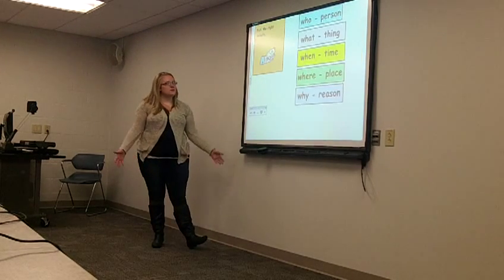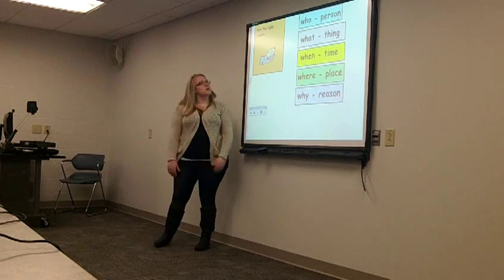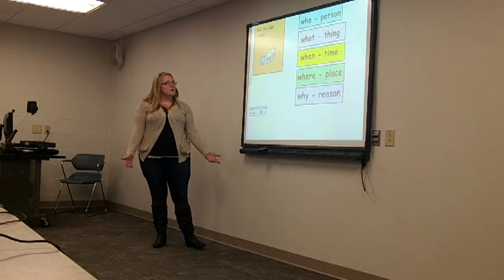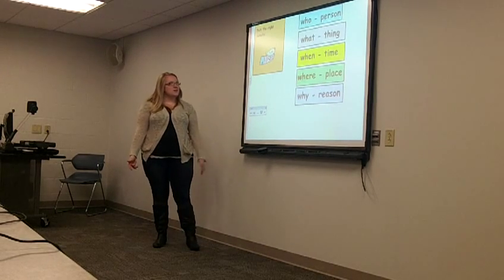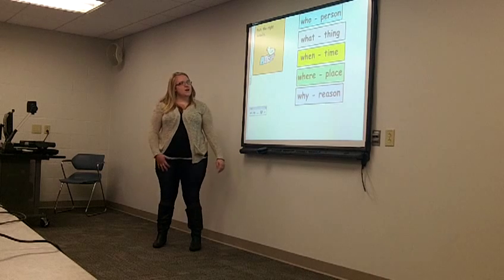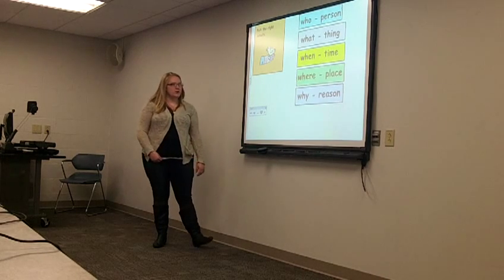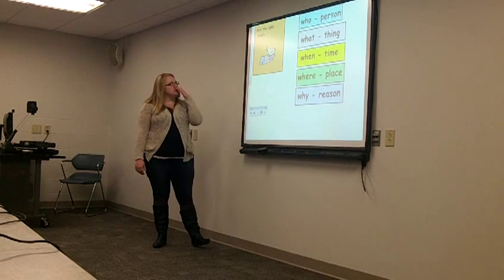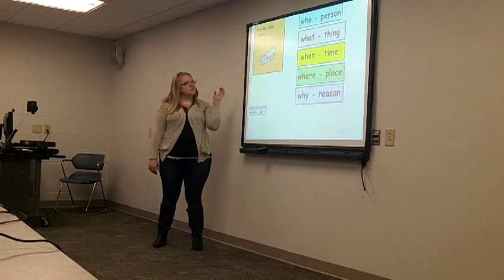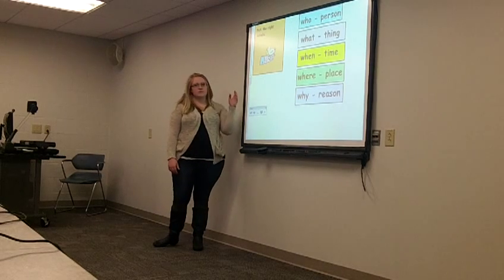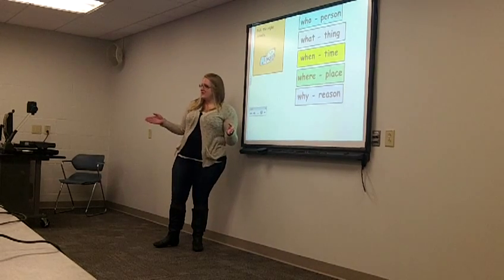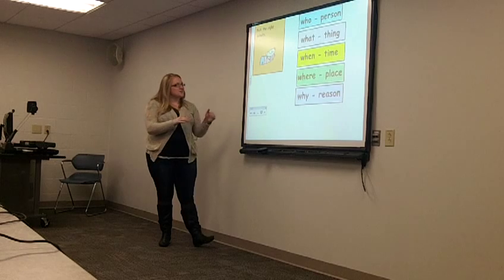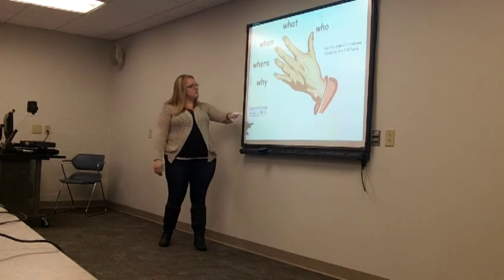To begin, the five W's are: who is a person, what is a thing, when is a time, where is a place, and why is a reason. These definitions are displayed so that you, as my first graders, would know each of them.